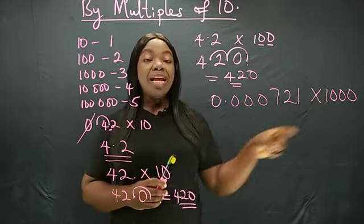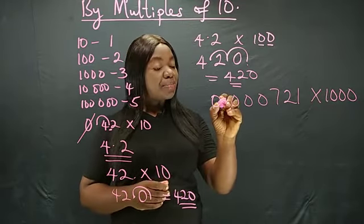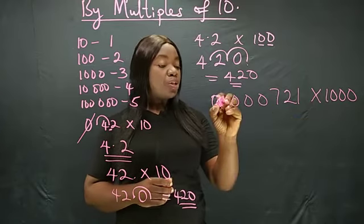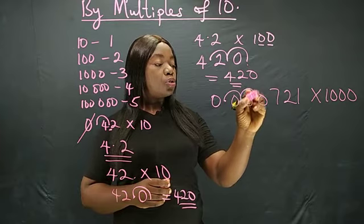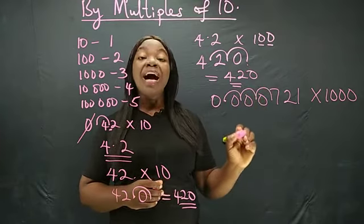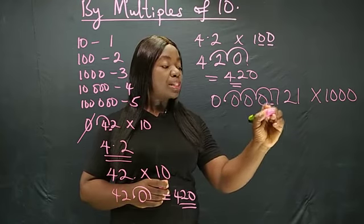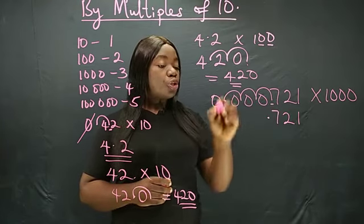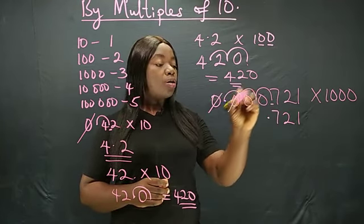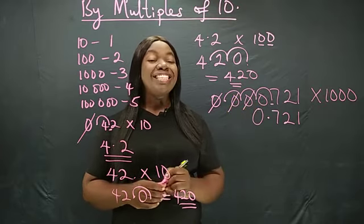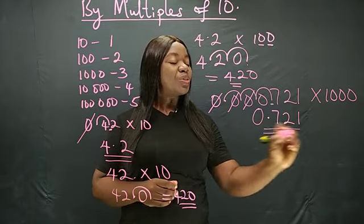So when multiplying by this type of multiple of 10, you start from the decimal point, counting to the right hand side in 3 places. So we have 1, 2, 3. Now the new place for our decimal point is at this point. So we have 0.721. You do not need to write all these zeros. You need only a single zero. So the answer is 0.721.